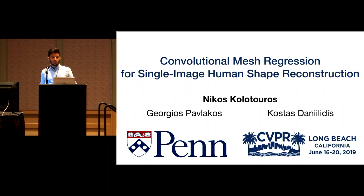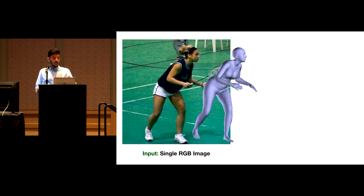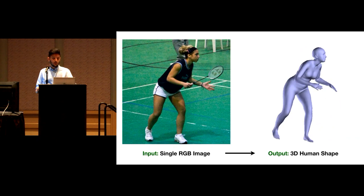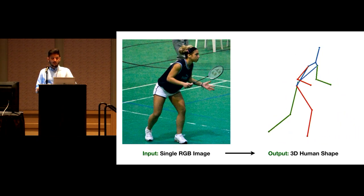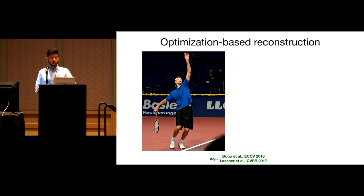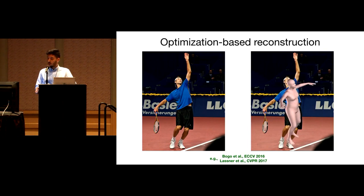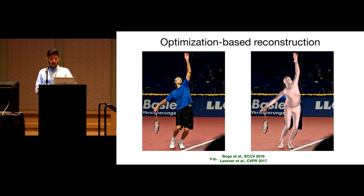I'm Nikos Kolotouros from the University of Pennsylvania. We present convolutional mesh regression for human shape reconstruction from single images. Given a single image, our goal is to estimate the full 3D shape of a person — not just the skeleton but the full body surface. Traditional optimization-based approaches detect features like silhouettes, part segmentation, or 2D joints and fit a body model iteratively, but this is slow and can fail with wrong or ambiguous detections.